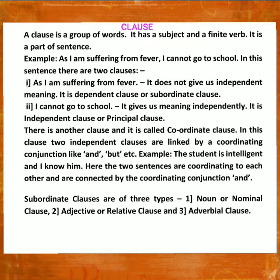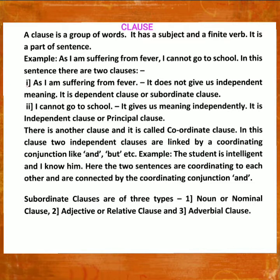Number two: 'I cannot go to school' — it gives us meaning independently. It is an independent clause or principal clause. There is another clause called coordinate clause. In this clause, two independent clauses are linked by a coordinating conjunction like 'and', 'but', etc. Subordinate clauses are of three types.